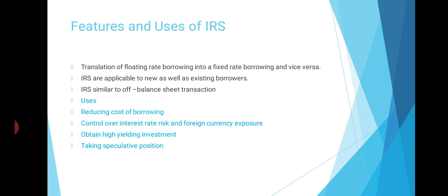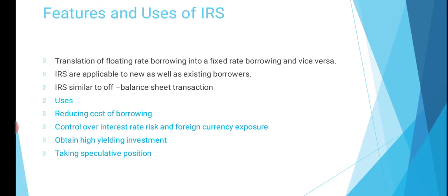Features and uses of interest rate swaps: An important feature is the translation of floating rate borrowing into fixed rate borrowing and vice versa. Interest rate swaps are applicable to new as well as existing borrowers. It is similar to an off-balance sheet transaction. Uses include reducing the cost of borrowings, helping to control interest rate risk and foreign currency exposure, obtaining highly yielding investment assets, and taking speculative positions in relation to future movement in the interest rate.